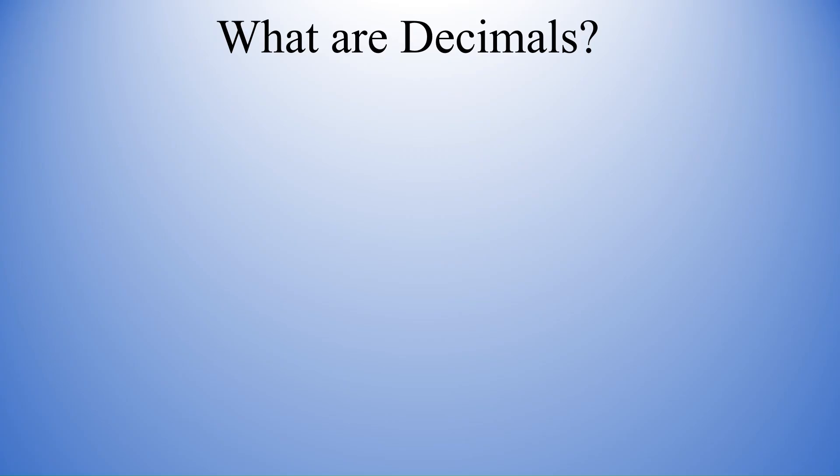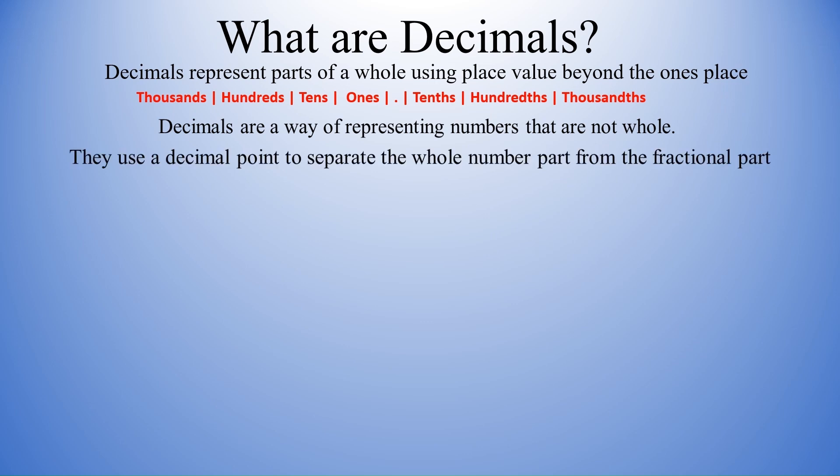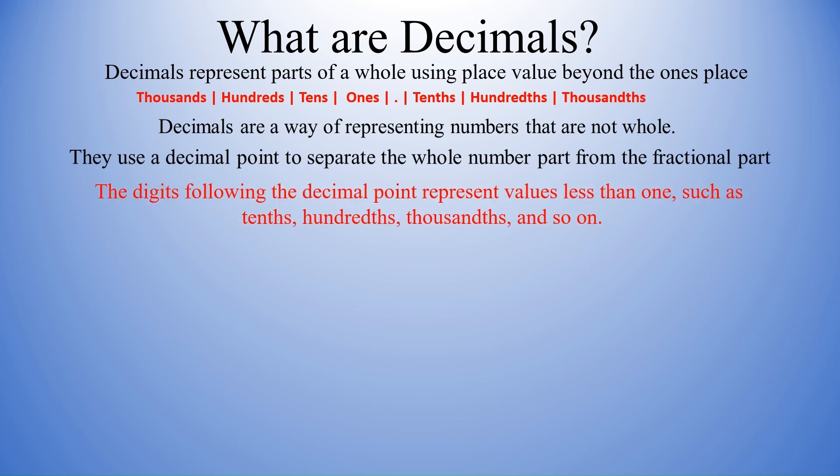What are decimals? Decimals represent part of a whole using place value beyond the ones place on the right. Here is how a place value chart is extended to include decimals. We shall discuss more about decimals in our next video. Decimals are a way of representing numbers that are not whole. They use a decimal point to separate the whole number part from the fractional part. The digits following the decimal point represent values less than 1, such as tenths, hundredths, thousandths, and so on.